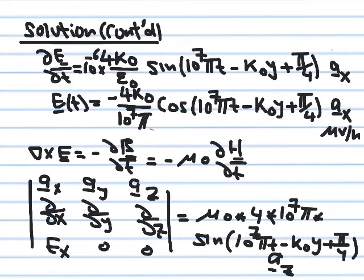There is an additional negative sign from the curl expansion, and differentiating the cosine gives another negative sign, and differentiating the angle minus k_naught y gives yet another minus k_naught. So there are four negative signs in total, making the left-hand side positive as well. You have to be careful tracking all of these signs.